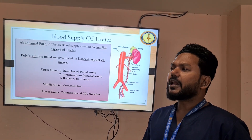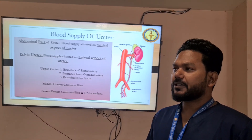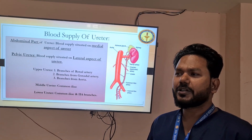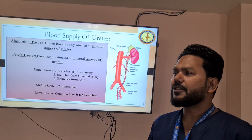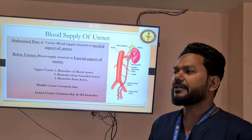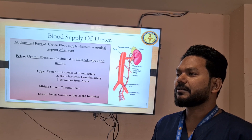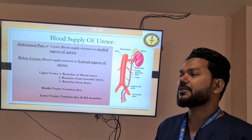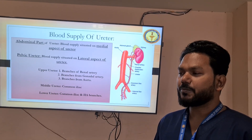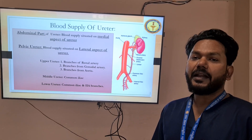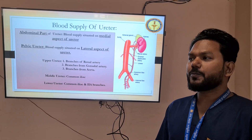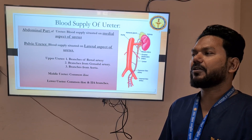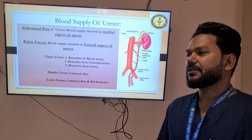Regarding blood supply of the ureter, the basic concept that one should keep in mind during surgical intervention is that in the abdominal part of the ureter, blood supply is situated on the medial aspect of the ureter, and in the pelvic part of the ureter, blood supply is situated on the lateral aspect of the ureter.